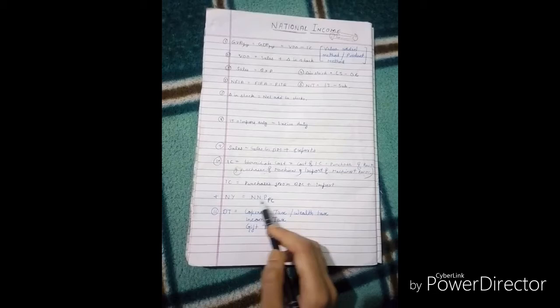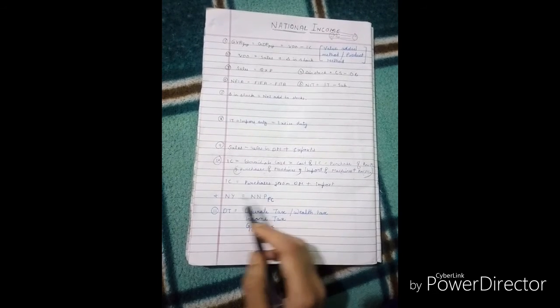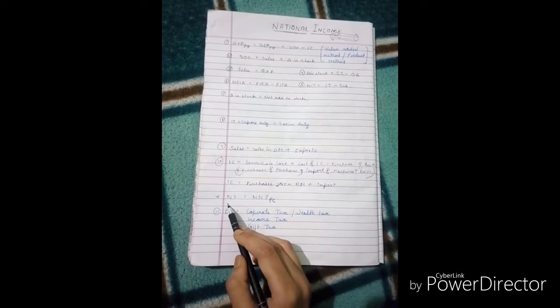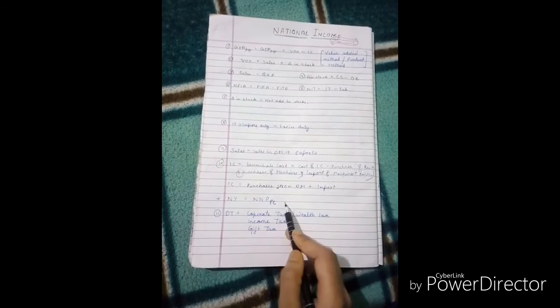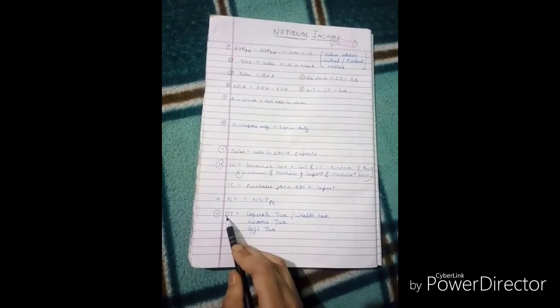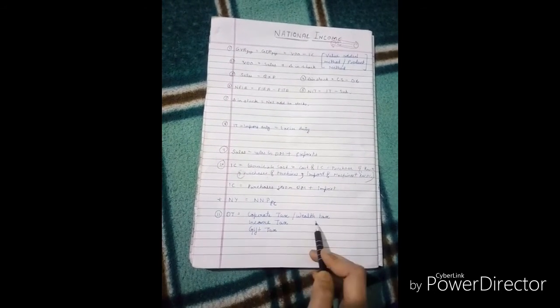National Income, NNPFC, is calculated when we have to find national income. So what do we have to consider for NNPFC? Direct taxes have different names: Corporate tax, wealth tax, income tax and gift taxes.